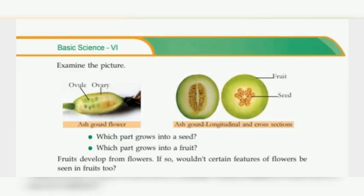Activity questions: 1. Withering Petals. 2. Which part grows into a seed? 3. Fruit develops from flowers — would certain features of flowers be seen in fruits too?